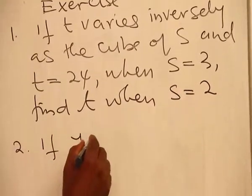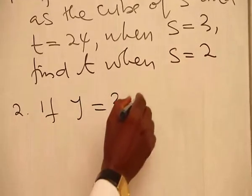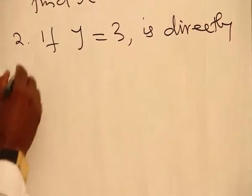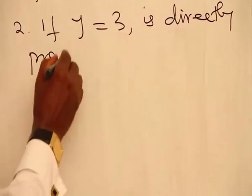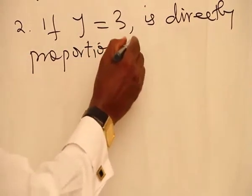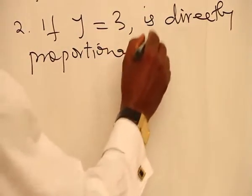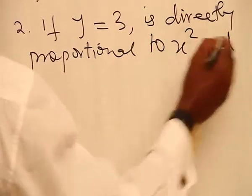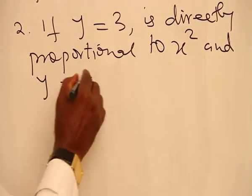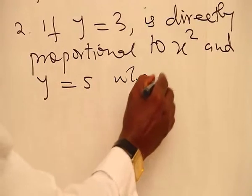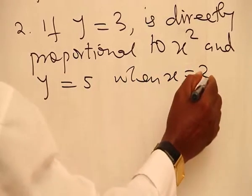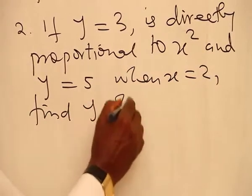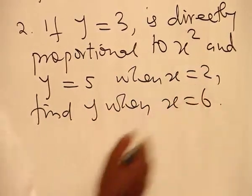Number 2. If Y plus 3 is directly proportional to S squared, and Y is equal to 5 when S is equal to 2, find Y when S is equal to 6.